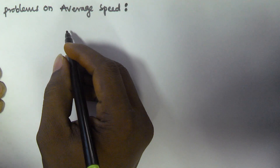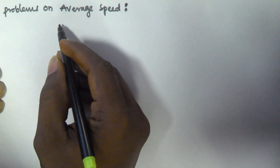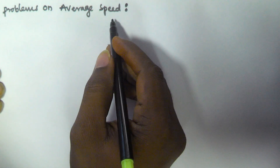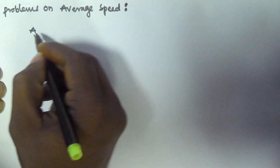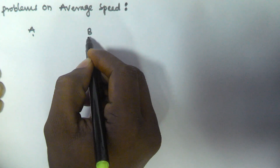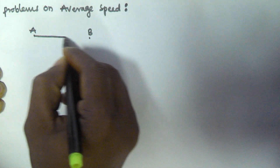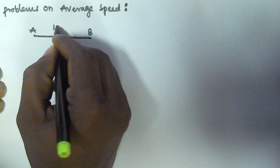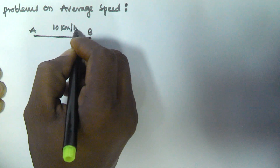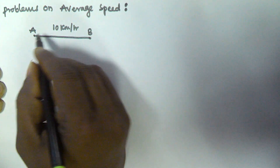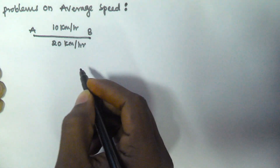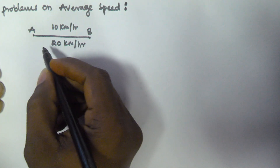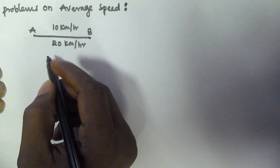Hello friends, in this video we will solve some problems based on average speed calculation. Let us assume a person travelled from point A to point B with speed 10 km per hour, and from B to A he travelled at 20 km per hour. What is his average speed in the overall journey?